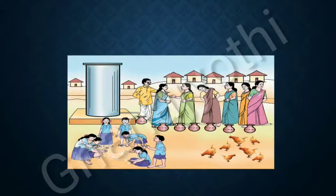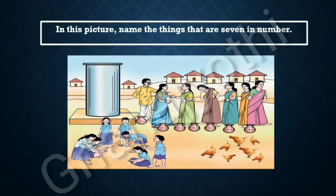Now look at this picture and name the things that are 7 in number. In this picture, we can see 7 houses, 7 children, 7 pots, 7 hens and 7 peoples.